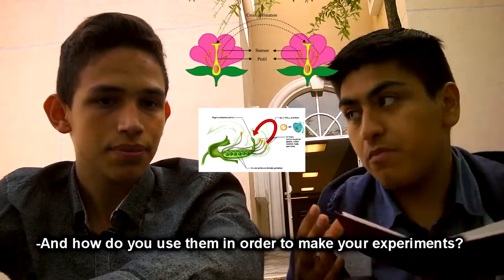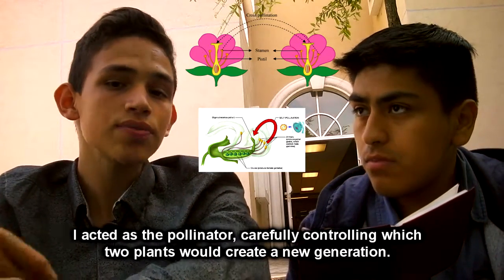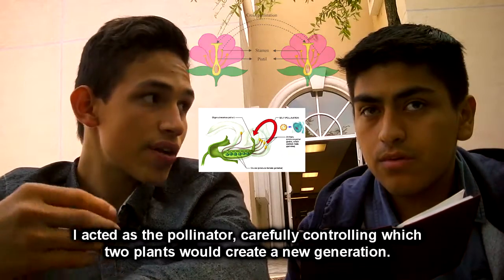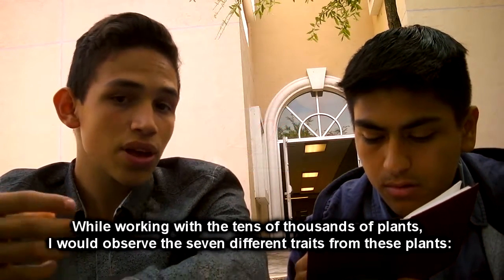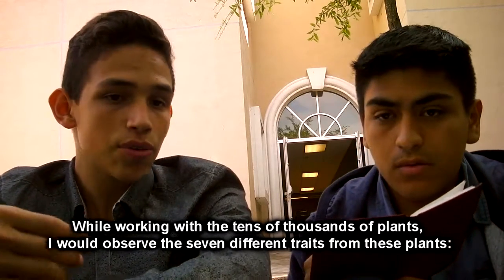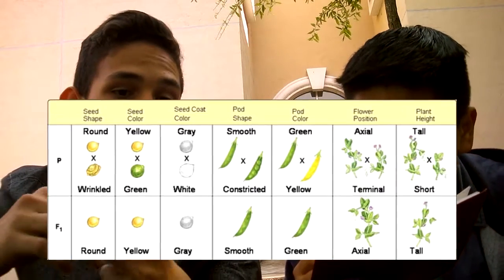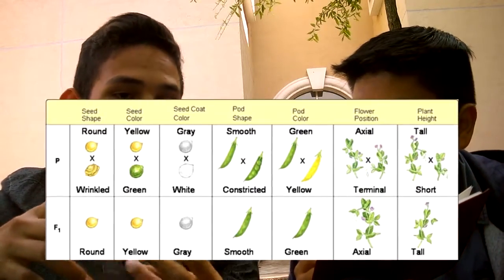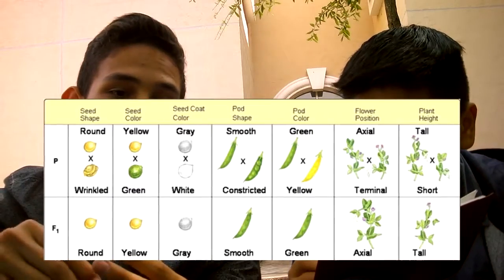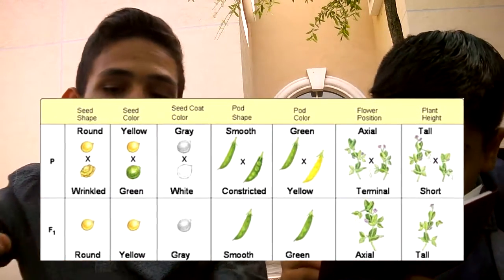And how do you use them in order to make your experiments? I act as a pollinator, carefully controlling which two plants will create a new generation. While working with tens of thousands of plants, I observed seven different traits: flower color (purple or white), flower position (axial or terminal), stem length (short or tall), seed shape (round or wrinkled), seed color (yellow or green), pod shape (inflated or constricted), and pod color (yellow or green).